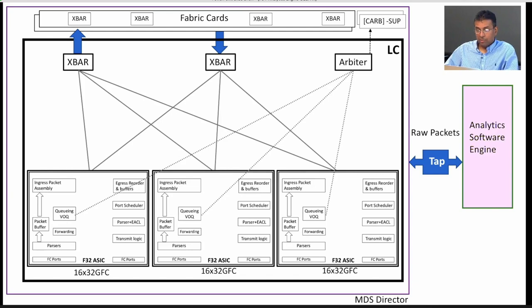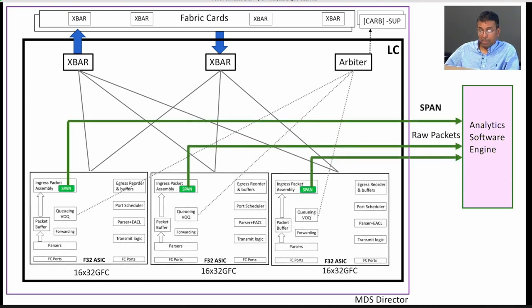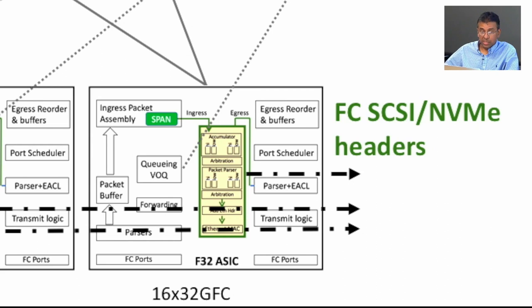Let me cover analytics. The options we have to get analytics include tapping and sending to an appliance device, but there are challenges — it can be disruptive or cause degradation in signal quality. Another option is to span packets, but this is not a scalable solution. That left us with one choice — and probably the best — which is to integrate the analytics solution inside our ASIC. Rajesh will cover more details on that.